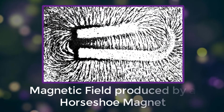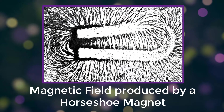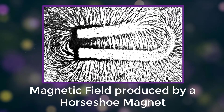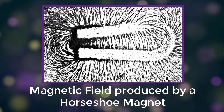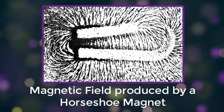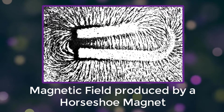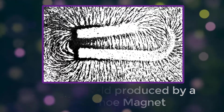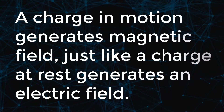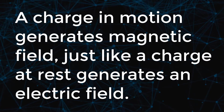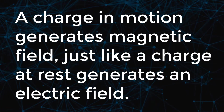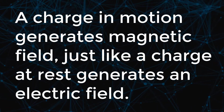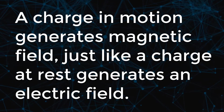The shape of the magnetic field produced by a horseshoe magnet is revealed by the orientation of iron filings sprinkled on a piece of paper above the magnet. A charge in motion generates a magnetic field, just like a charge at rest generates an electric field.